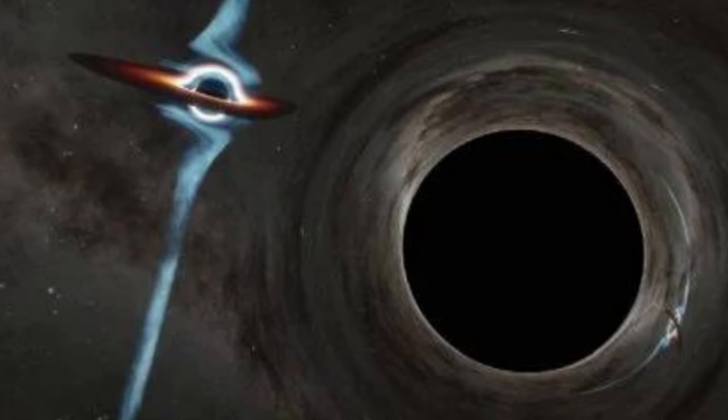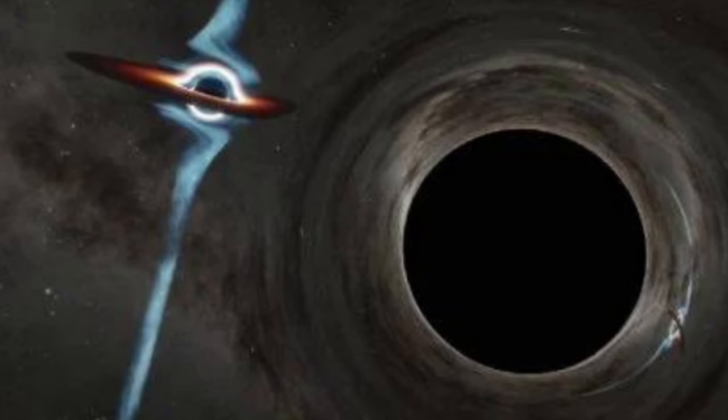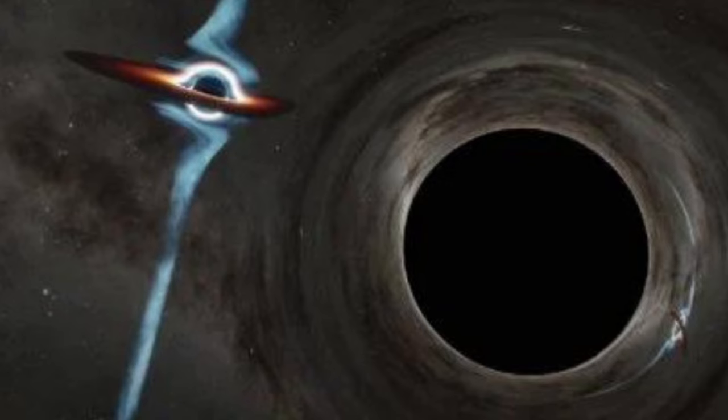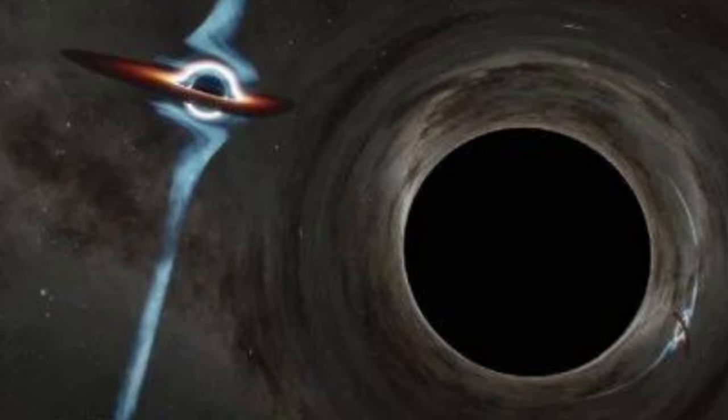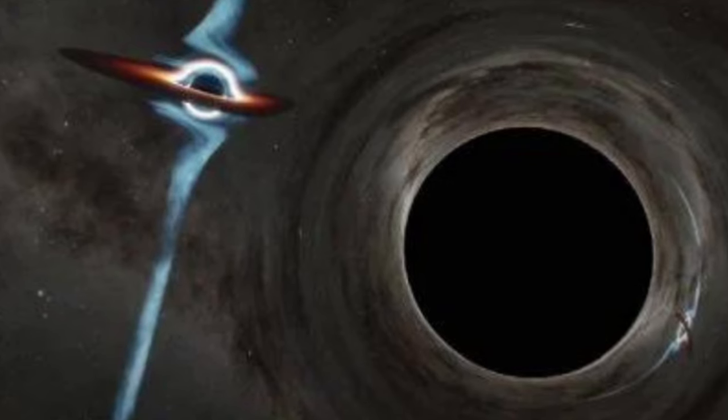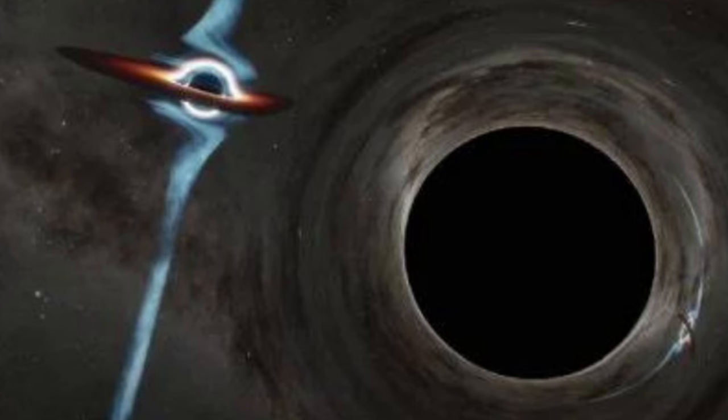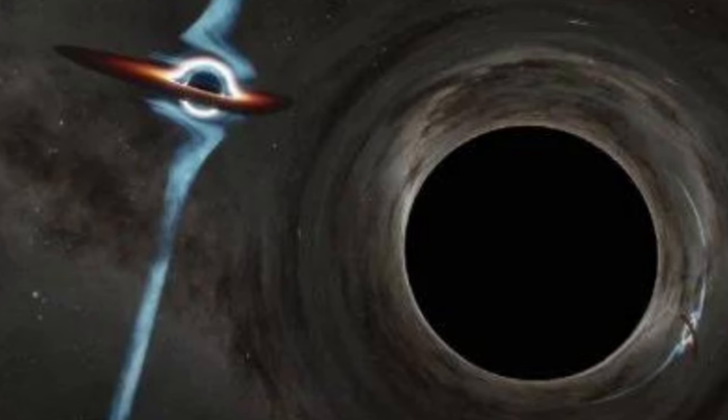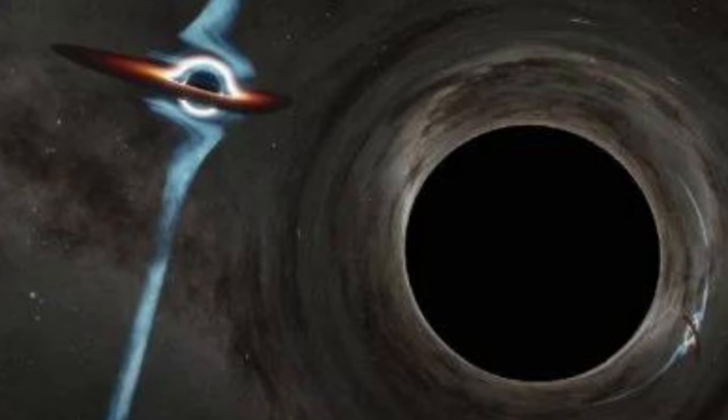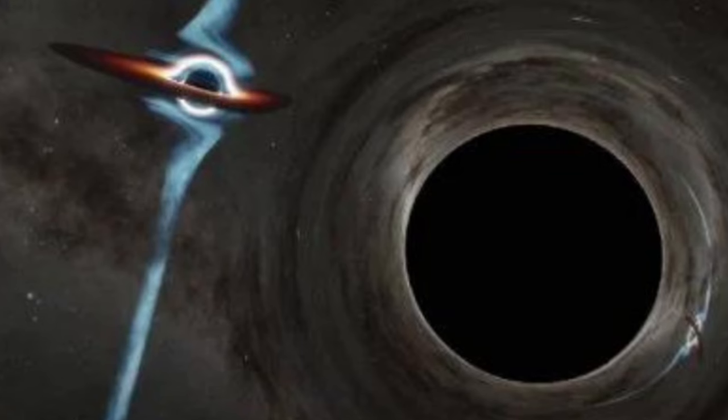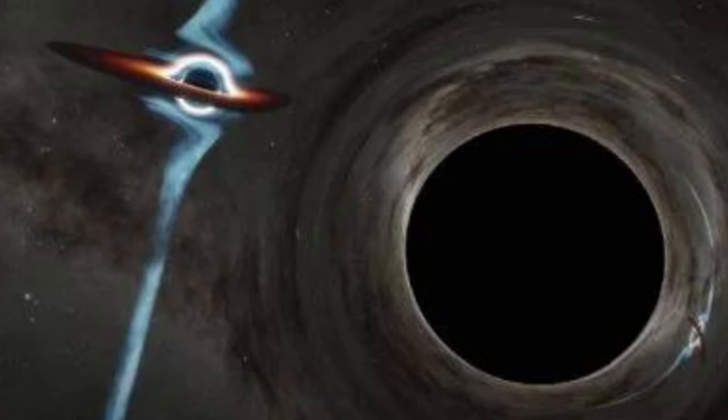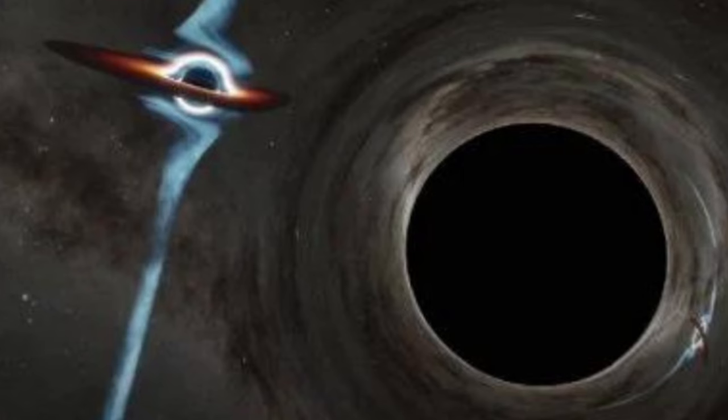Supermassive black hole binaries can also tell us something about how these colossal objects, millions to billions of times the mass of the Sun, can get so incredibly massive. Binary black hole mergers are one way this growth can occur. Finding binary supermassive black holes will help us understand if it's a common pathway for this growth, and that could lead to more accurate modeling.